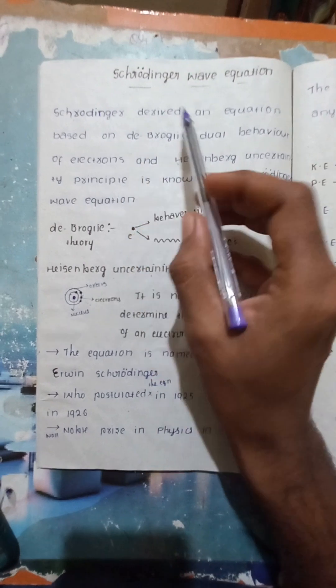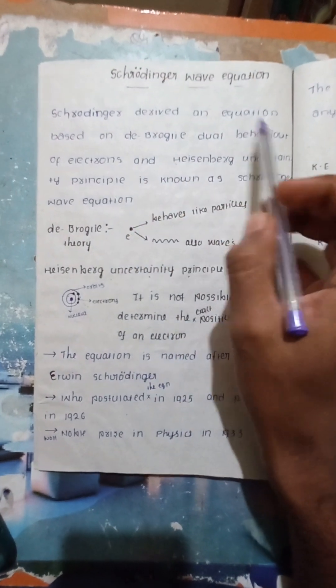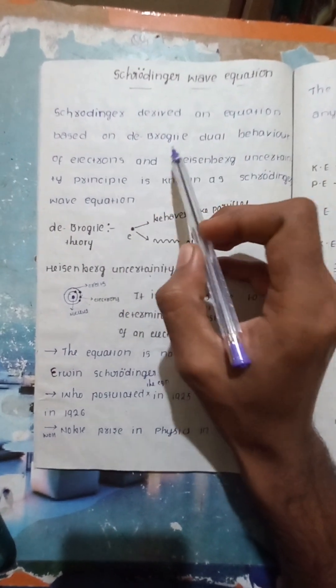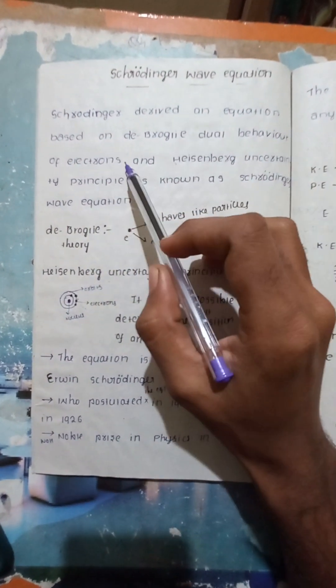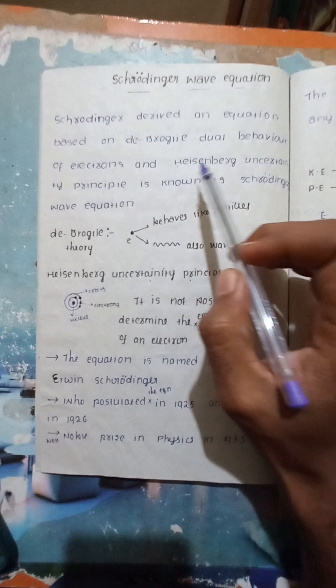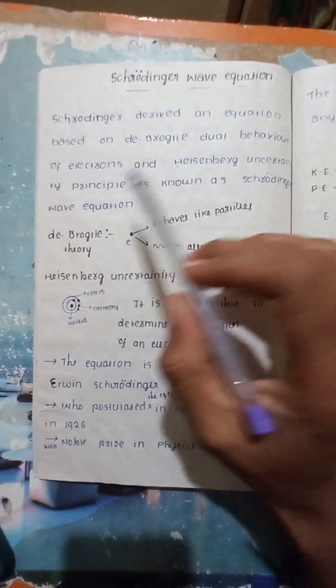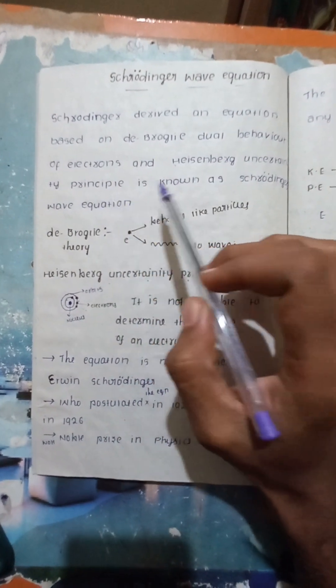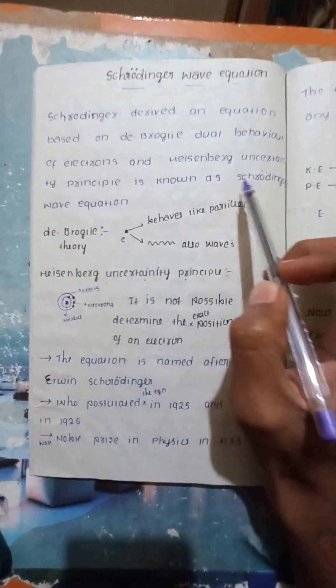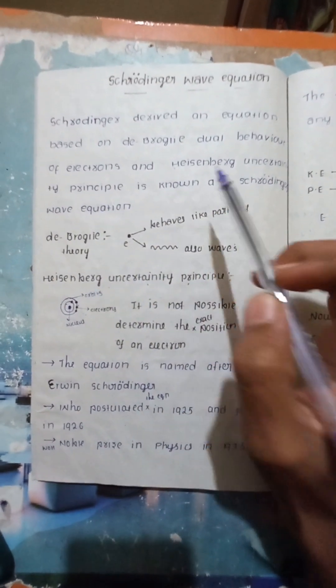Schrödinger derived an equation based on de Broglie's dual behavior of electrons and the Heisenberg uncertainty principle. This is known as the Schrödinger wave equation.